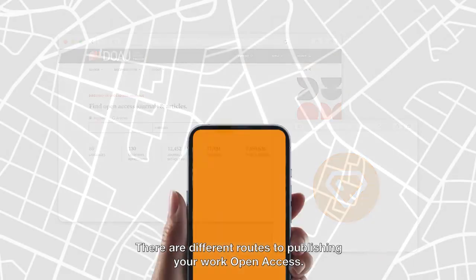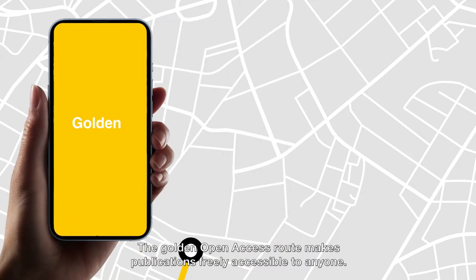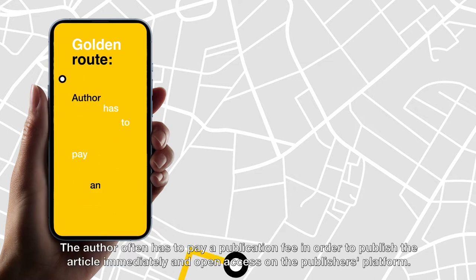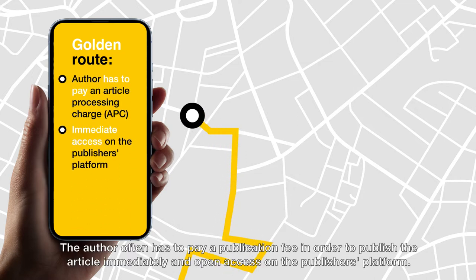There are different routes to publishing your work Open Access. The Golden Open Access route makes publications freely accessible to anyone. The author often has to pay a publication fee in order to publish the article immediately and Open Access on the publisher's platform.